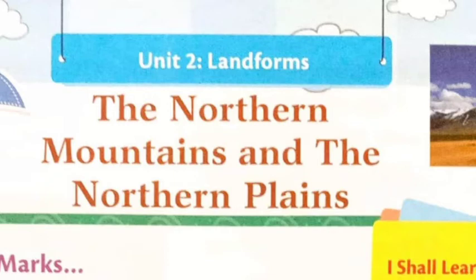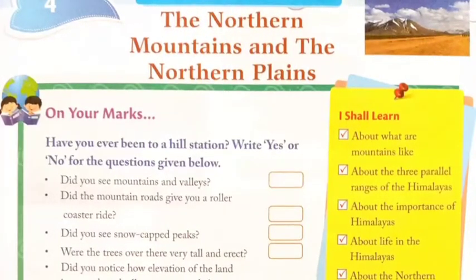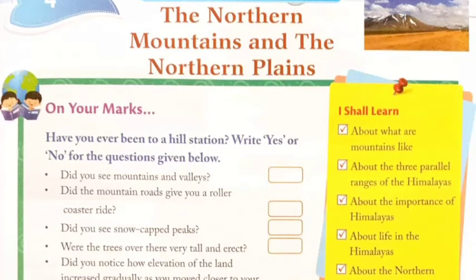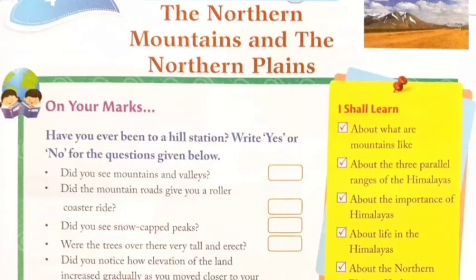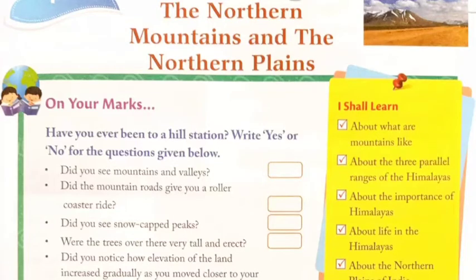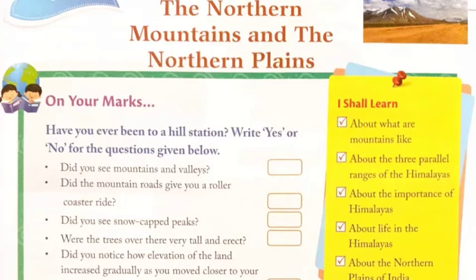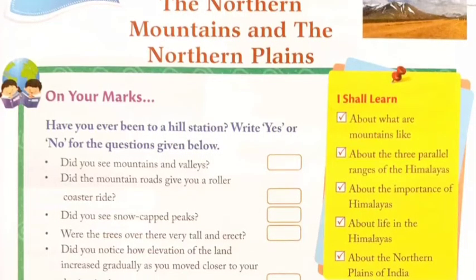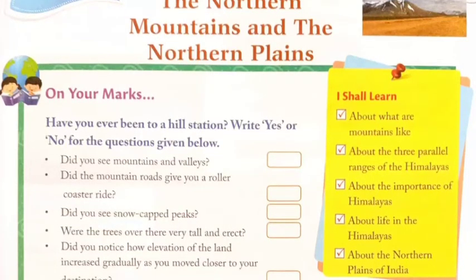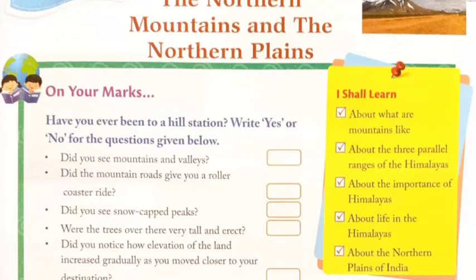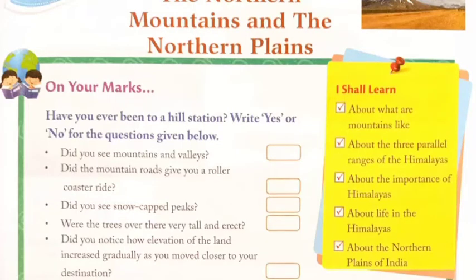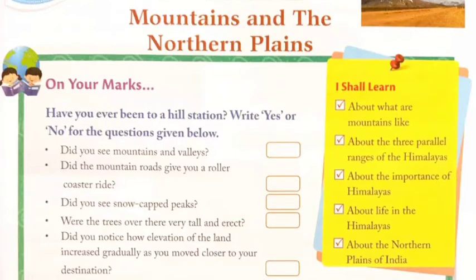The Himalayan stretches from Kashmir in the west to Arunachal Pradesh in the east. Dear students, open page number 21 of your book. The Northern Mountains and the Northern Plains — On Your Marks. Have you ever been to a hill station? Write yes or no for the questions given below: Did you see mountains and valleys? Did the mountain roads give you a roller coaster ride? Did you see snow-capped peaks? Were the trees over there very tall and erect? Did you notice how the elevation of the land increased gradually as you moved closer to your destination?